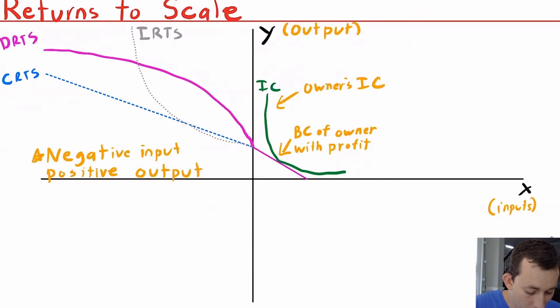Now, if we were to use constant returns to scale, unsurprisingly, it's going to be a line. And if we had increasing returns to scale production, it would be a convex curve, again in the second quadrant. Now in the first quadrant, you can see it becomes sort of this line. And this line is basically the budget constraint of the owner with the profit that he makes from doing this production.